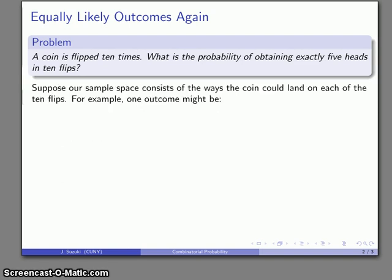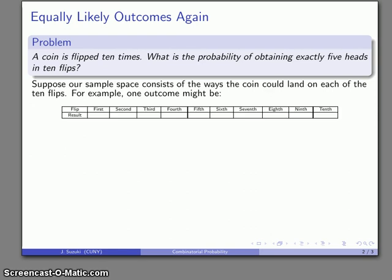So one way to change this is we might consider a different sample space which consists of the ways that the coin could land on each of our ten flips. For example, just to keep everything organized, we might construct this table here—apologize for the very small print on the table, I couldn't fit it onto one line otherwise. But what we have is our first, second, third, all the way through our tenth flip.